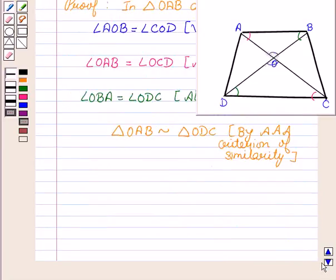Now, for two similar triangles, we know that the ratio of their corresponding sides are equal. This implies that OA/OC = OB/OD.